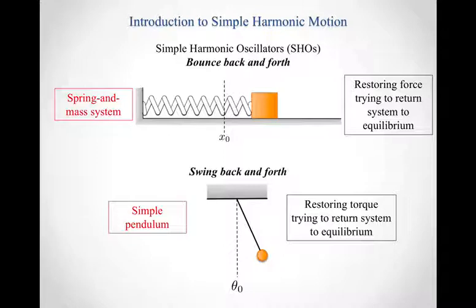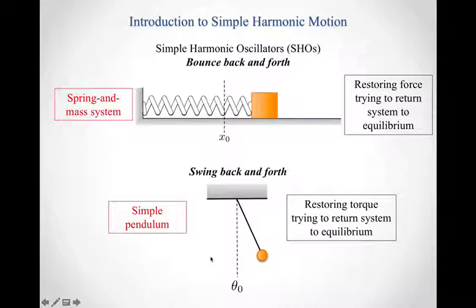These are the two types of simple harmonic oscillators we'll deal with. The first one that bounces back and forth we'll call a linear simple harmonic oscillator — it's oscillating along a line. The second one we'll call an angular simple harmonic oscillator, because it's the angle it rotates through that we care about.